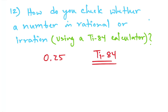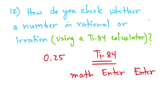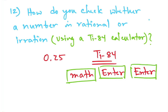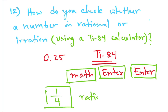On your TI-84 calculator, you press Math, Enter, Enter. So if you put in 0.25 and then press Math, Enter, Enter, it will give you 1 over 4. Since 1/4 is a fraction, it is going to be a rational number.